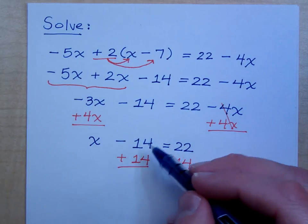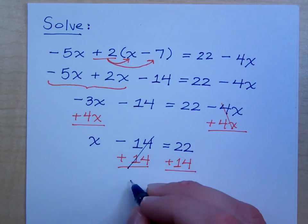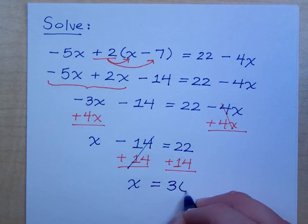So, negative 14 plus 14 becomes 0, and I have x is equal to what? 36. I was excited because I got it right. Anybody else excited they got it right? No one's excited.